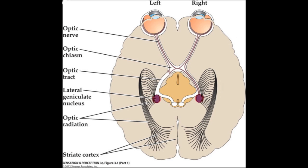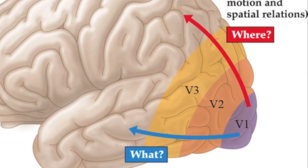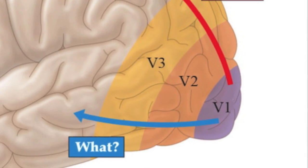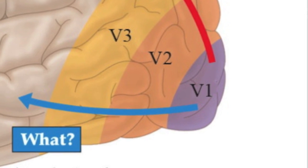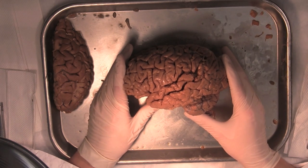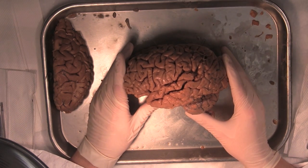From the LGN, the optic track becomes the optic radiation, as the axons radiate out to project onto primary visual cortex in the occipital lobe. Primary visual cortex is also known as V1, and it primarily performs computations for edge detection — the first steps in seeing. V1 is where we see the first neurons receiving input from both the left and right eyes.